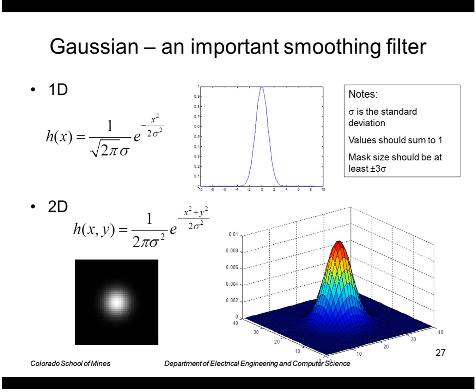A Gaussian is an important example of a spatial filter. In one dimension it's e to the minus x squared over two sigma squared with a normalizing coefficient so the integral integrates to one. In two dimensions it's e to the minus x squared plus y squared over two sigma squared, normalized so the volume equals one.